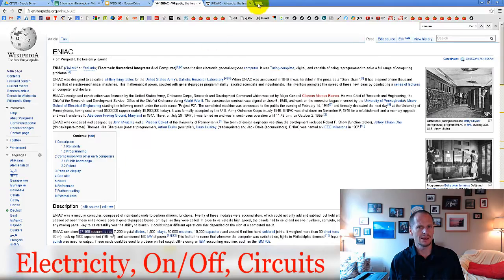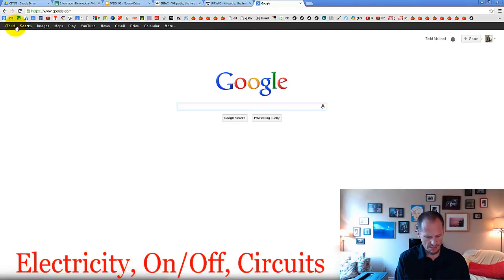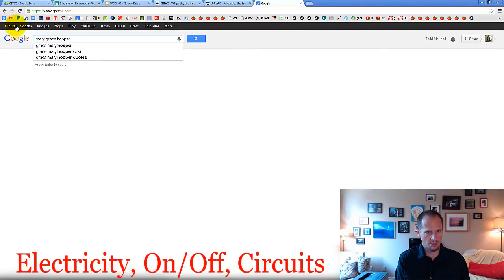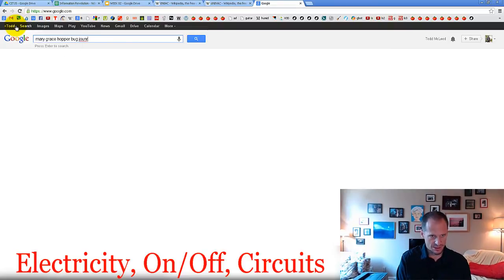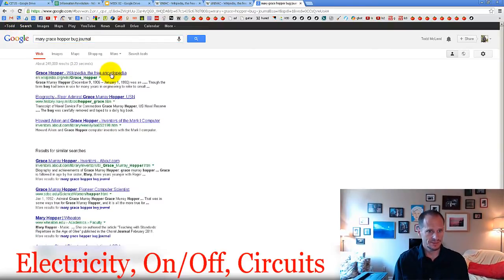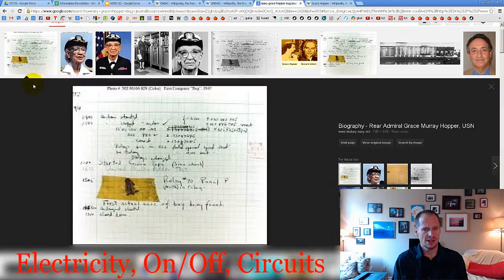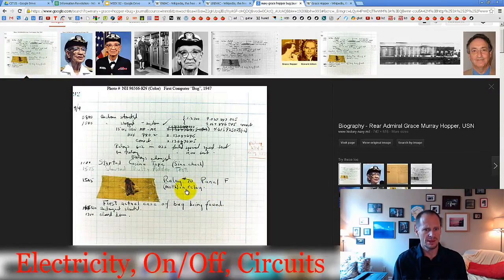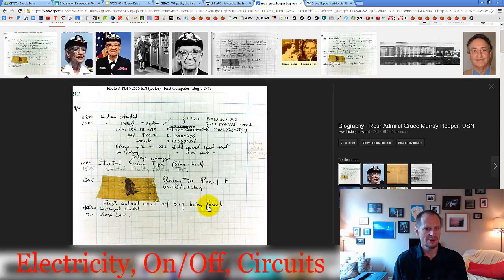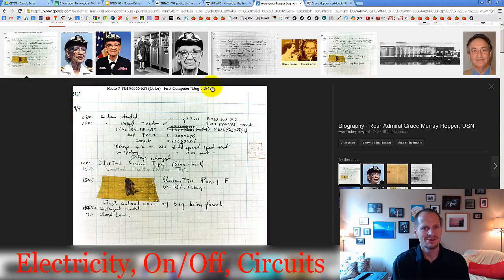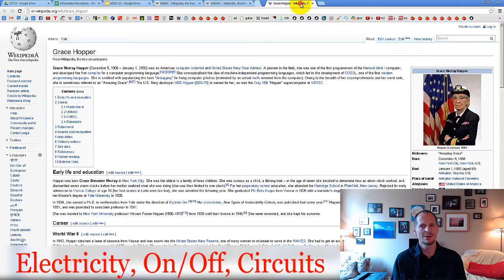If you actually Google Mary Grace Hopper bug journal and we'll just search for images of that, here we go. Here's an image of relay to panel F, moth and relay, first actual case of bug being found, 1947. First computer bug 1947. So there it is, debugging the computer, and that was done by Grace Hopper, who is an important figure in computer science, computer programming.